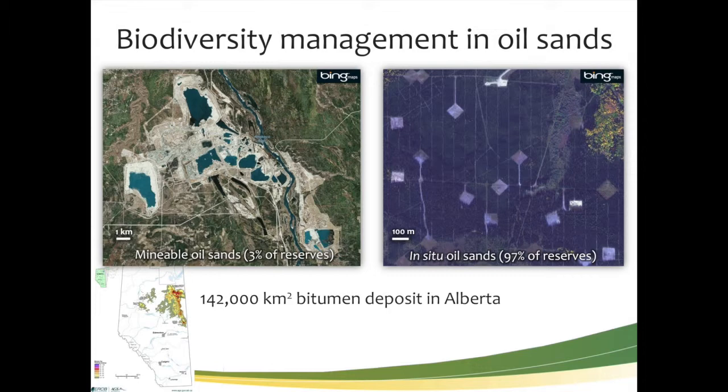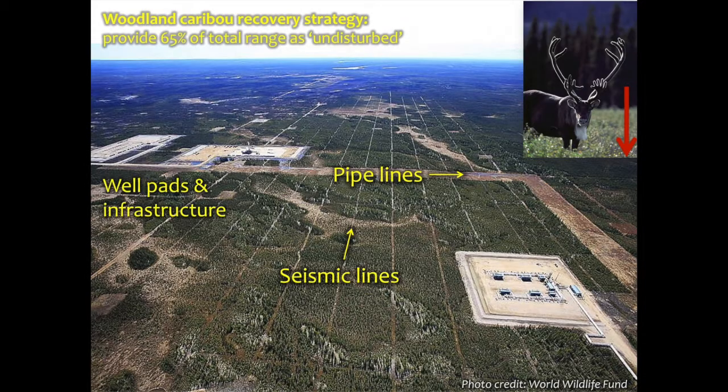This covers quite a broad area — 142,000 square kilometers, the size of the state of New York — in the scale of the bitumen footprint. A fairly typical SAGD in situ operation includes pipelines, infrastructure, and seismic lines.